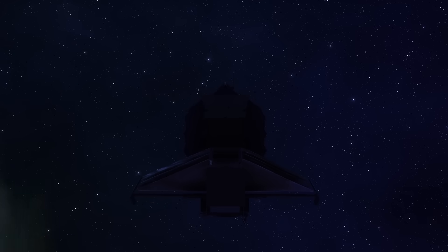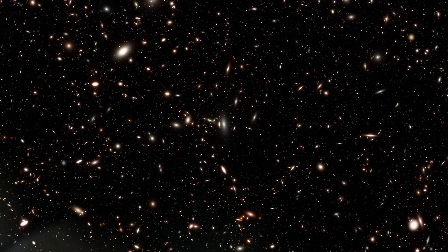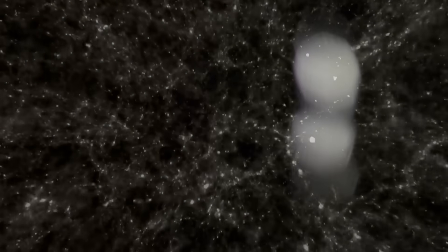But Webb wasn't done. When astronomers zoomed in deeper, they found more of these anomalies. Whole clusters of massive galaxies, glowing in defiance of every formation model we've ever trusted. Either the physics of the early universe are wrong, or we're looking at something we've never seen before, the fingerprints of a cosmic process we cannot yet explain.